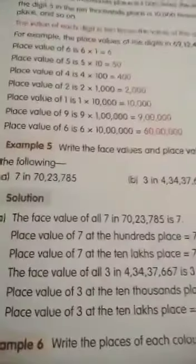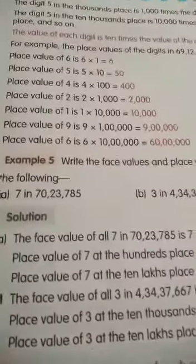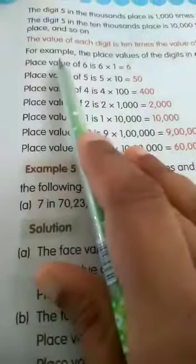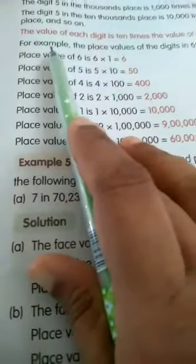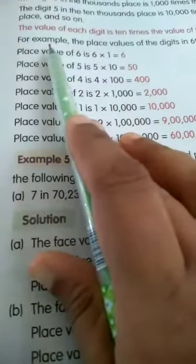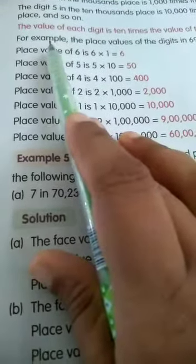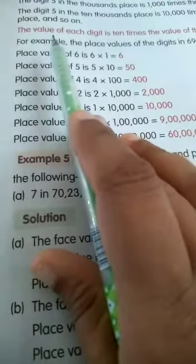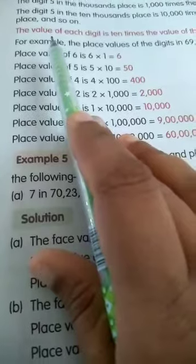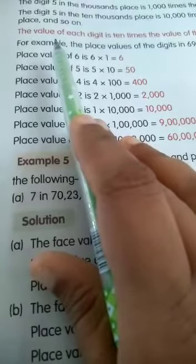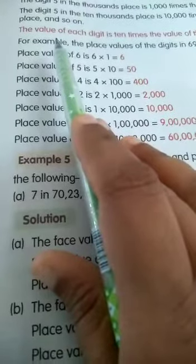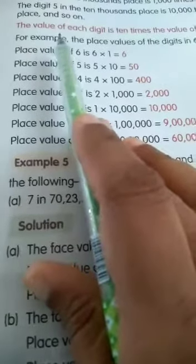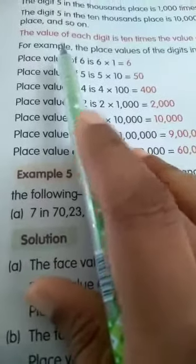This is chapter 1, page number 9. In the last video, we have discussed the face value and the place value with examples. This is one more example.